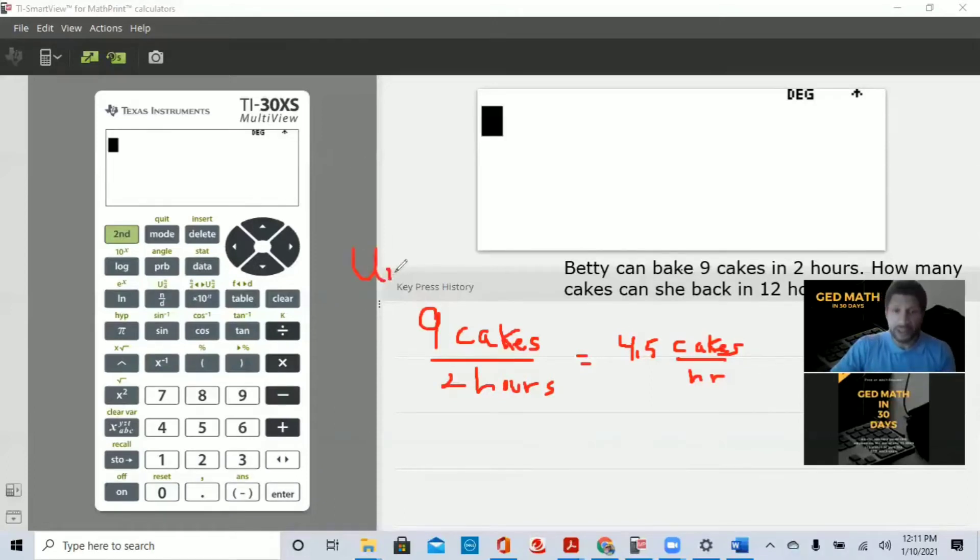So the unit rate, this is every hour she can bake 4.5 cakes. So in order to know how many she can do in 12 hours, we just have to do 12 times 4.5. And mental math tells us 12 times 4 is 48. A half of 12 is 6. And we get 54. This was done doing mental math. I'm going to show you how to do it in a second on the calculator.